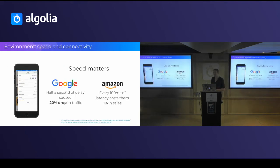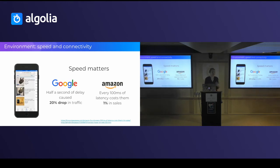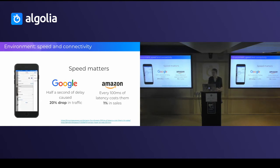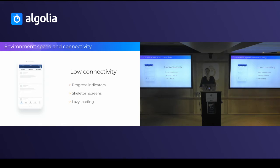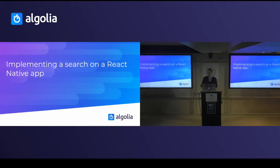Speed matters. If a request takes more than 100 milliseconds, users start to feel something is wrong. Try to have fast requests, but also handle poor mobile connectivity — on the subway, for example. You have ways to help: add progress indicators, use skeleton screens to show where content will appear, and perform lazy loading.